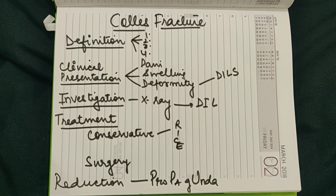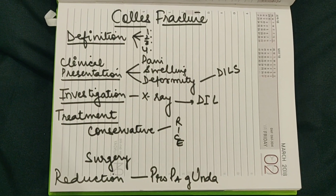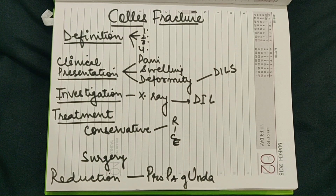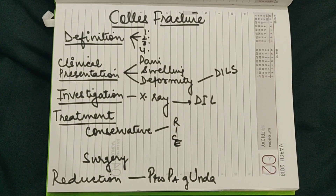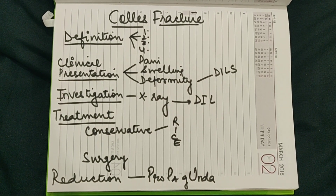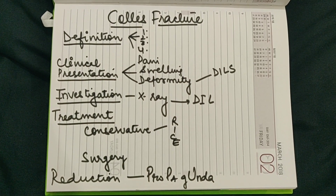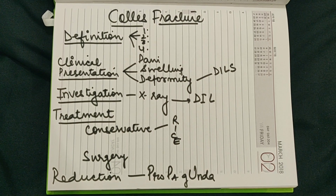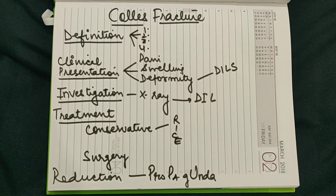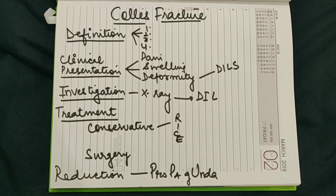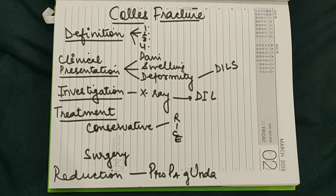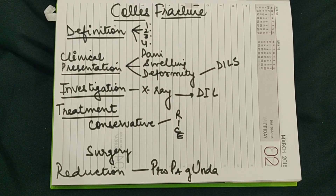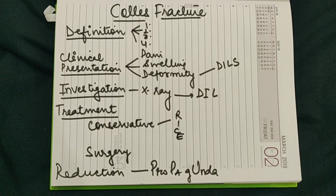Now we will organize it. Colles' fracture comes under the following headings: definition, clinical presentation, investigation, and treatment. In definition, it is a fracture of the distal end of radius at the cortico-cancellous junction, about 2 to 2.5 centimeters from the wrist joint, with dorsal displacement. In clinical presentation, the main features are pain, swelling, and deformity. In deformity, the mnemonic DILS covers: dorsal displacement, dorsal tilt, impaction, lateral displacement, lateral tilt, and supination.